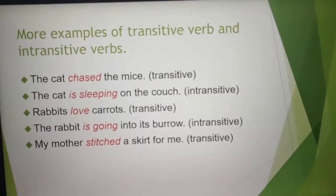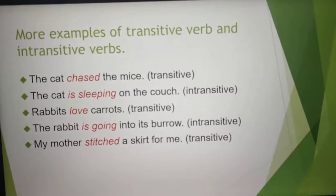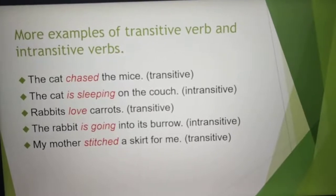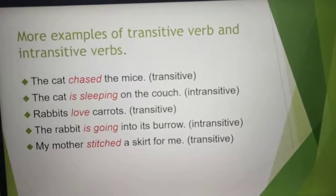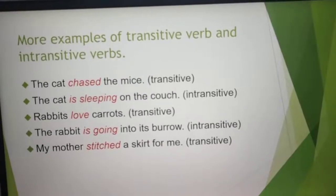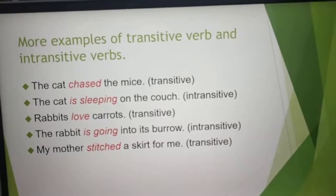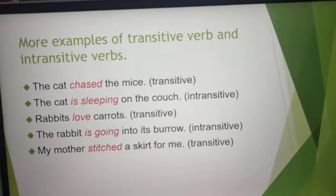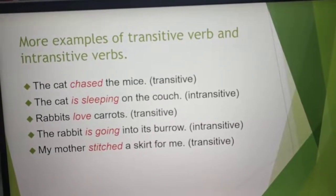'My mother stitched' — stitched what? A skirt for me. So it needs an object, which is 'skirt.' Therefore, it is a transitive verb.